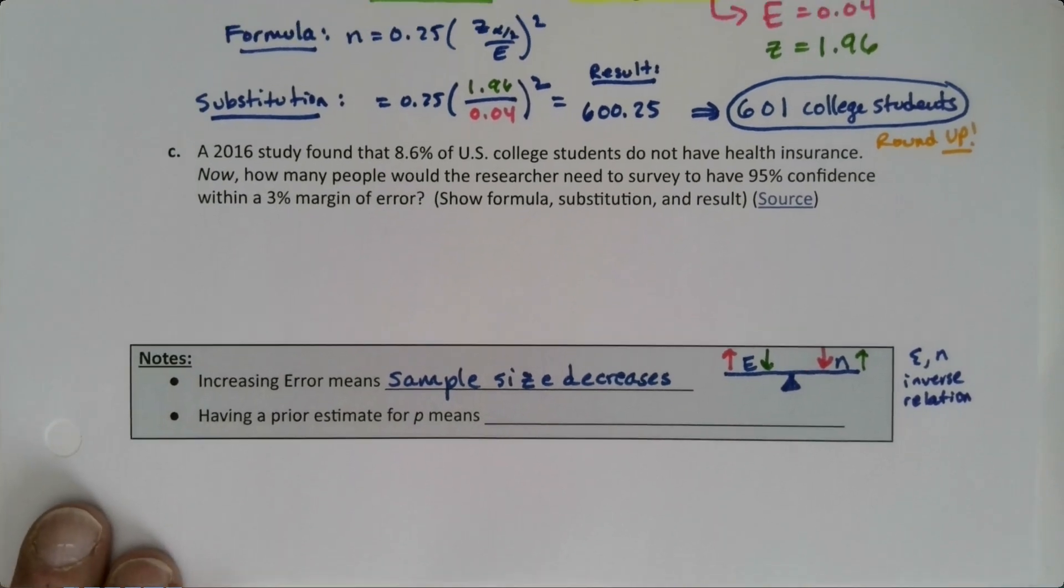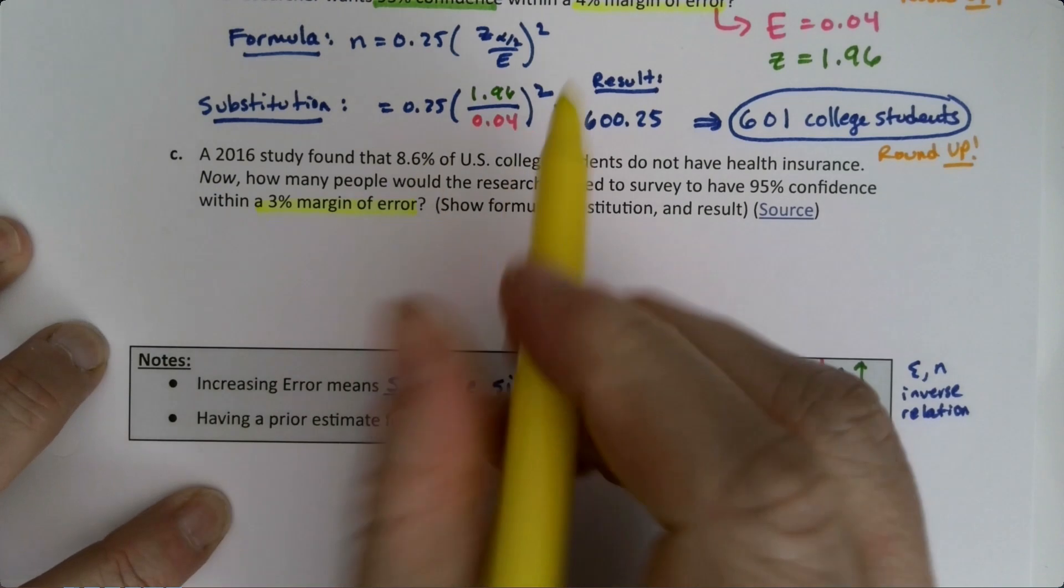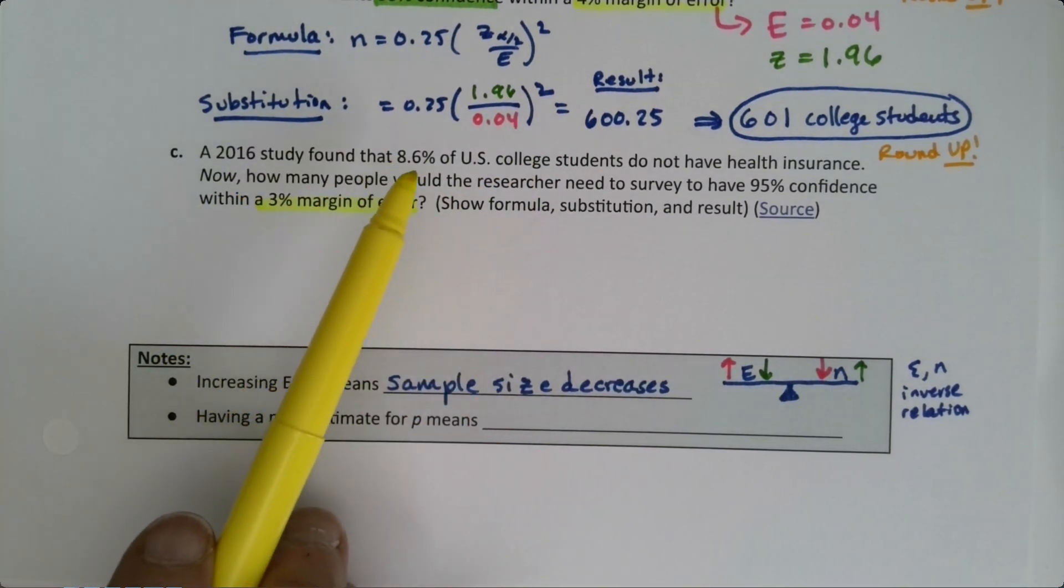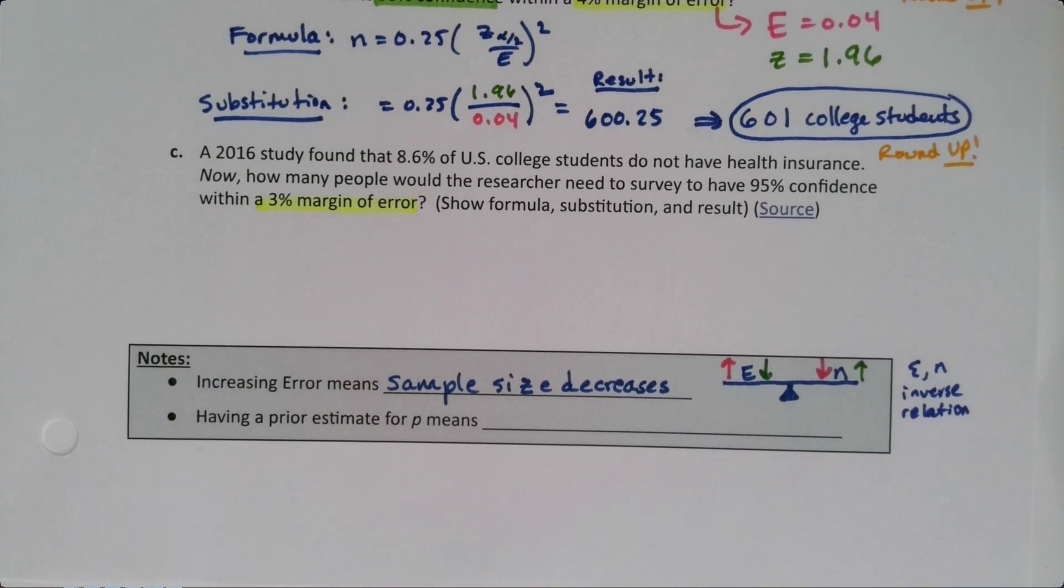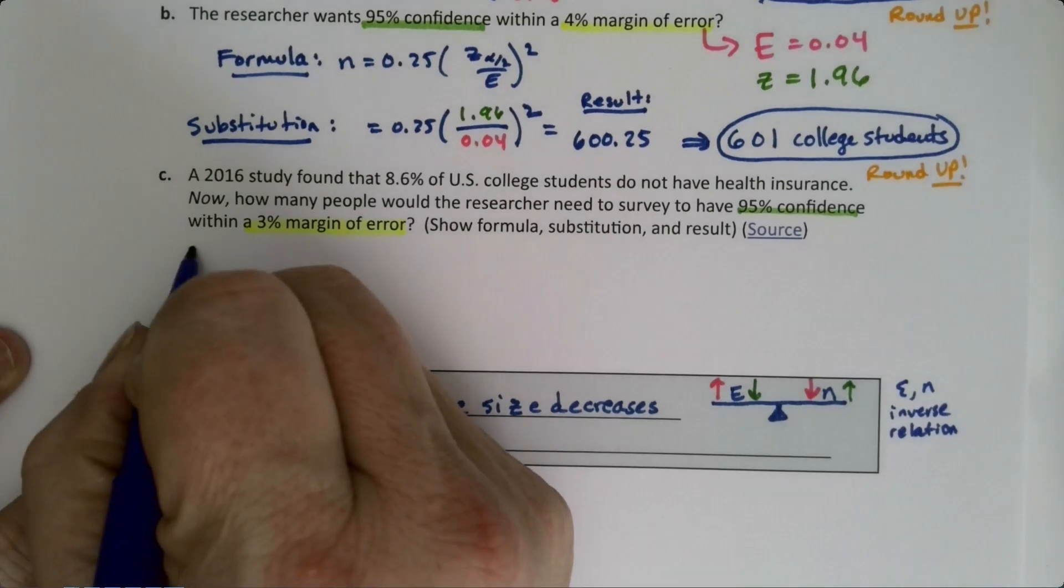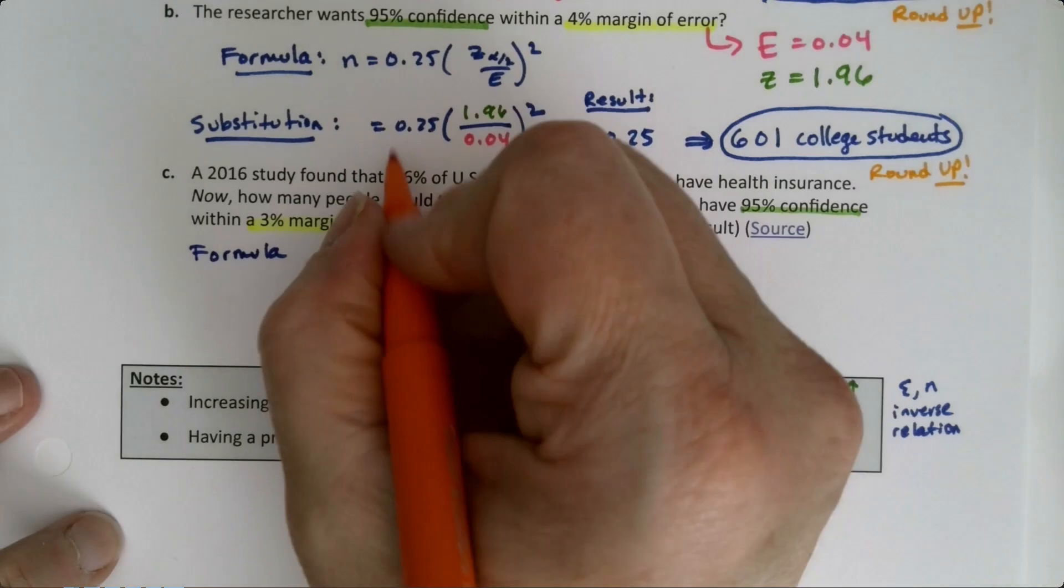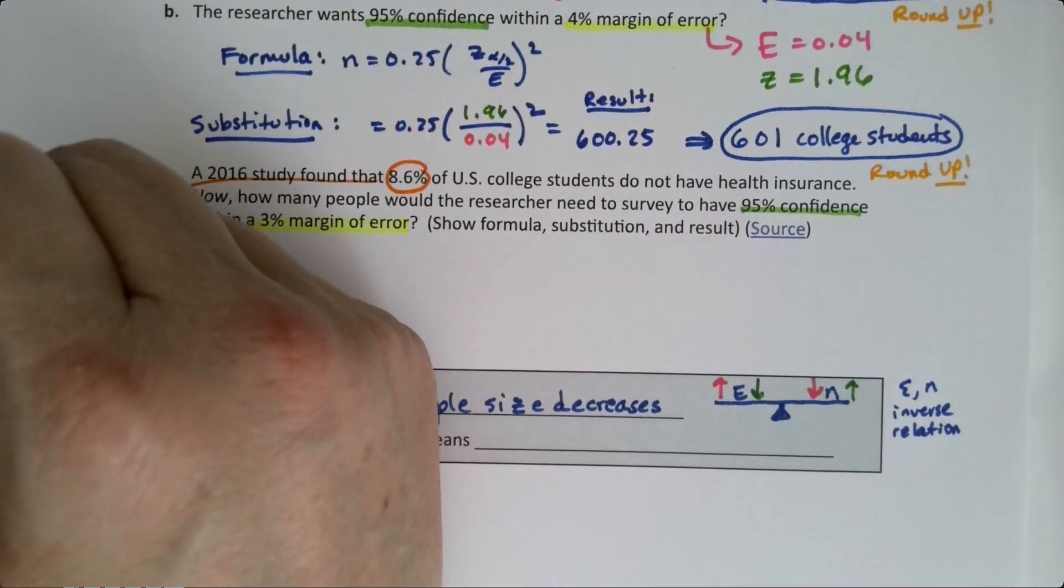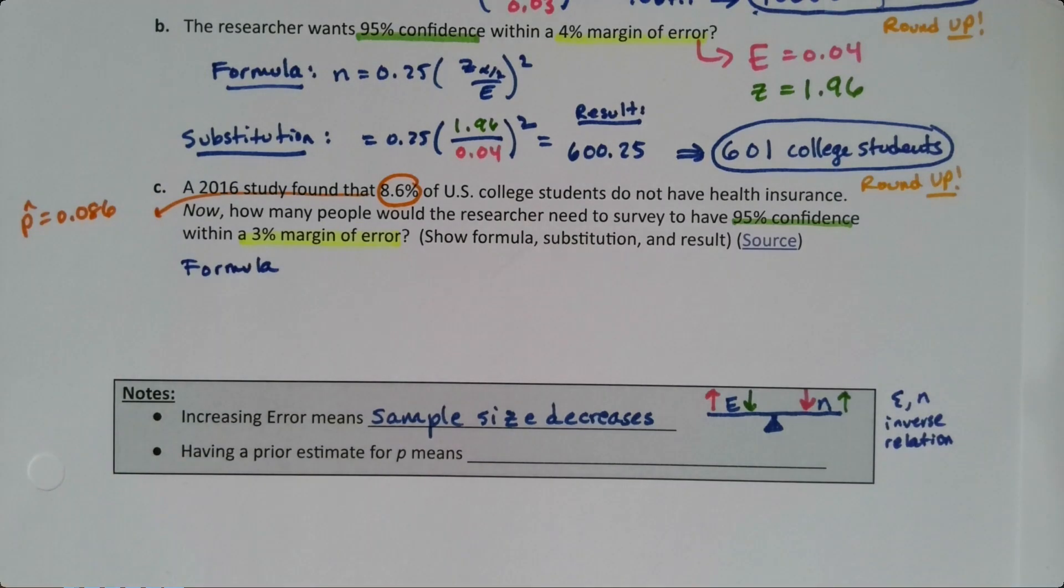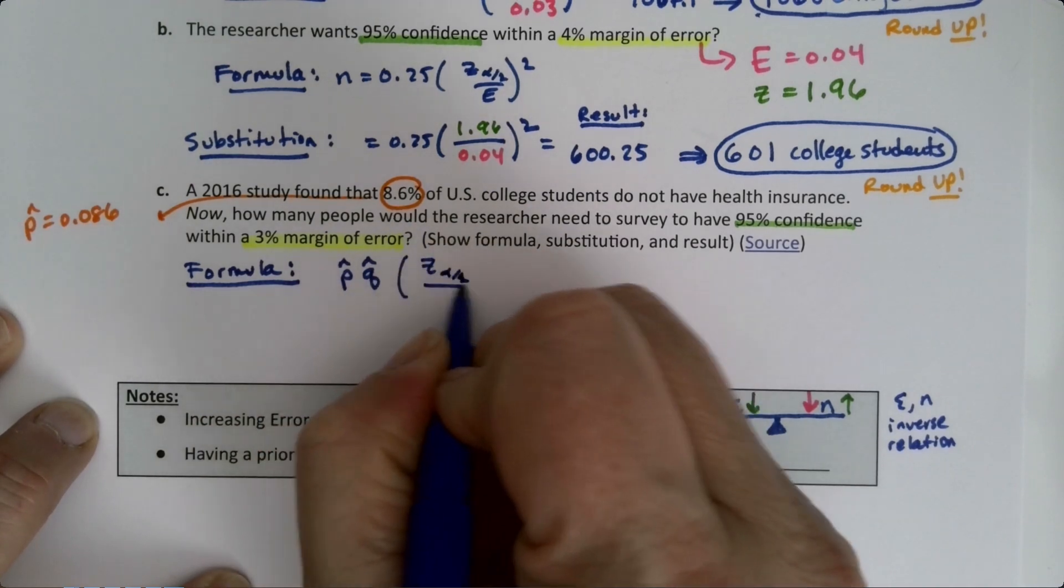Now suppose we had a 3% margin of error again, but this time we have some old study from 2016 that says 8.6% of U.S. college students do not have health insurance. Now find the sample size at 95% confidence. If I have an old p-hat, which I do - this 0.086 is p-hat - that means the formula I get to use is the one on the left: p-hat times q-hat times z over error squared.